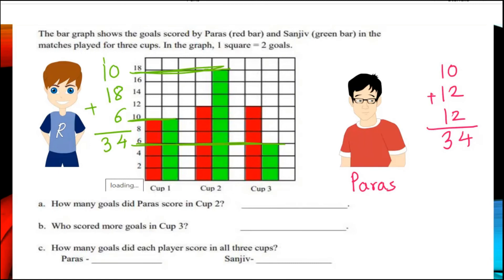Now let us solve the questions. First question: How many goals did Paras score in Cup 2? In second match for Cup 2 Paras achieved 12 as you can see in the picture by blue color.